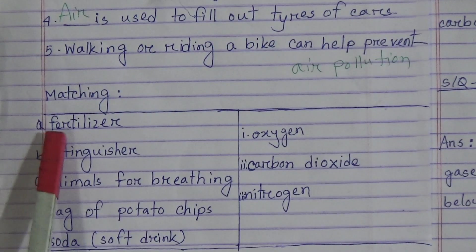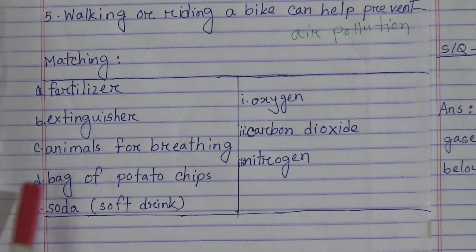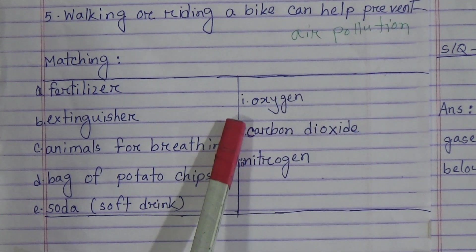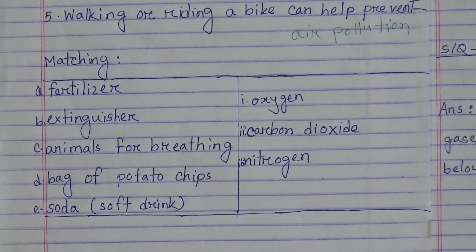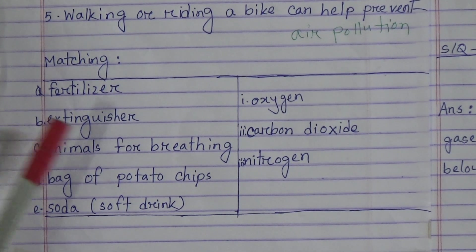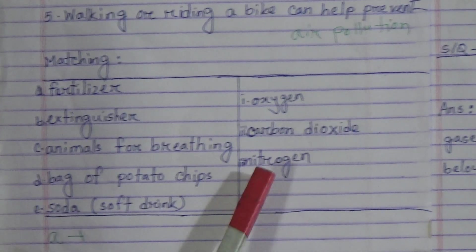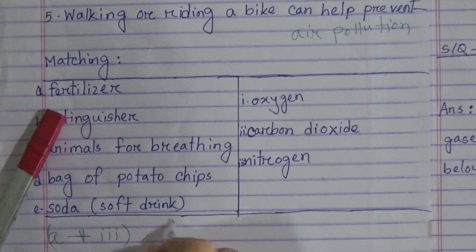In the left side: option A — fertilizer, option B — extinguisher, option C — animals for breathing, option D — bag of potato chips, option E — soda, that means soft drinks. In the right side: option 1 — oxygen, option 2 — carbon dioxide, option 3 — nitrogen. Option A, fertilizer, will be matched with option 3, nitrogen. Write A plus 3: fertilizer plus nitrogen.